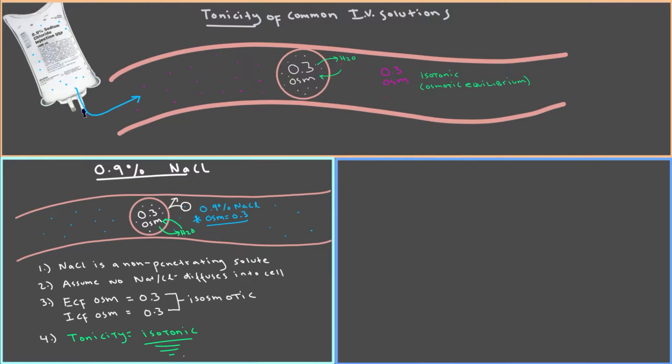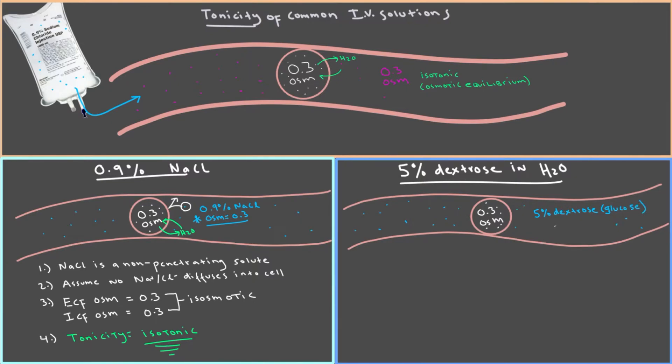Now let's look at another solution that is also used in the clinic. 5% dextrose in water. So we'll set up the same situation. We have a blood vessel and we have a red blood cell with an osmolarity of 0.3 like normal. But here instead, we're going to place the red blood cell in a solution of 5% dextrose in water. Dextrose, by the way, is basically just glucose.